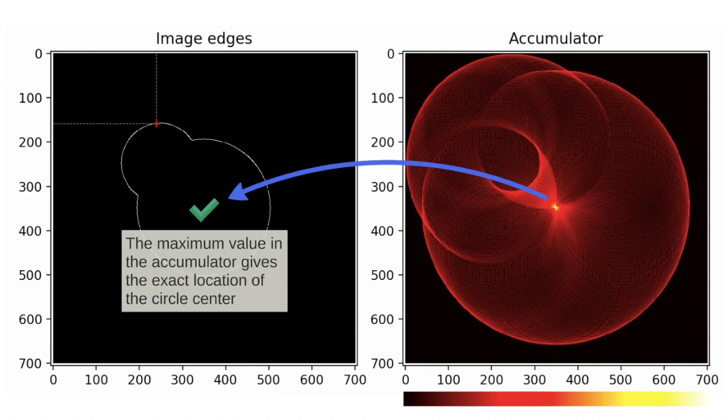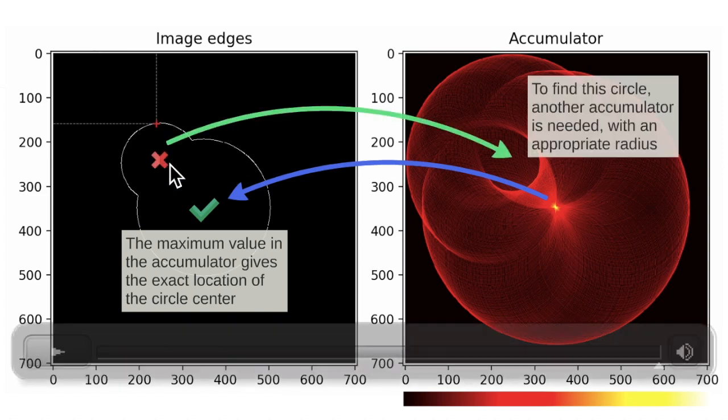And again considering the same example this circle center was not detected by the algorithm. Because to find this circle another accumulator is needed with an appropriate radius. This circle has a different radius so we should compute a new accumulator considering these radius.